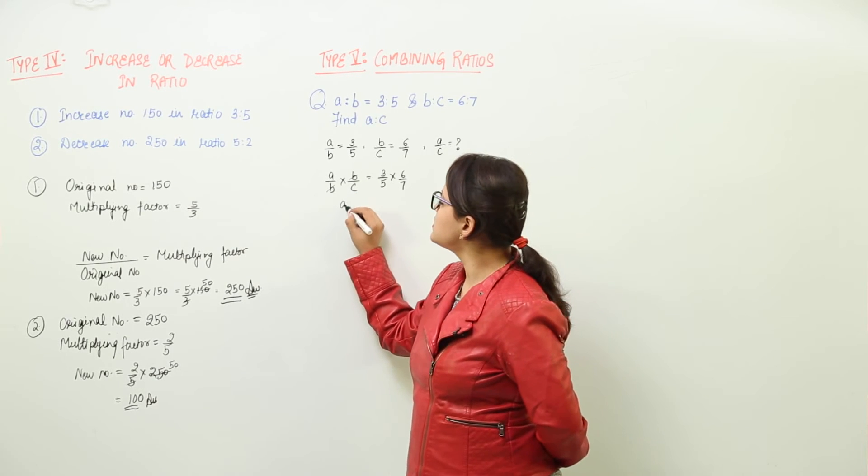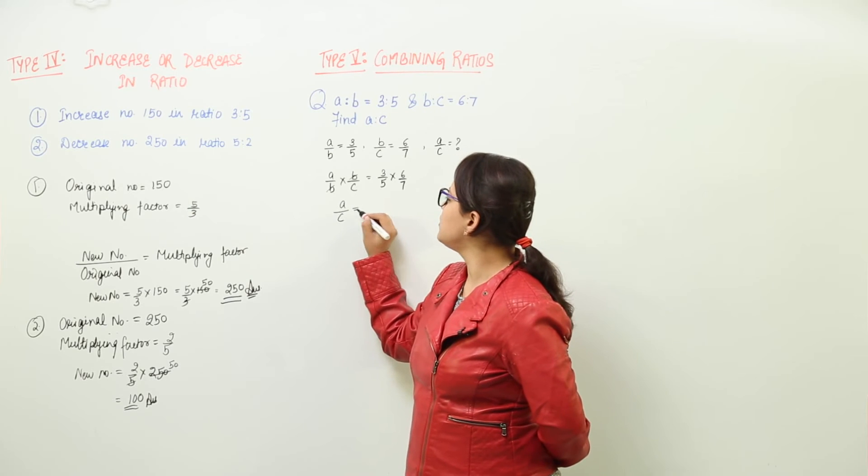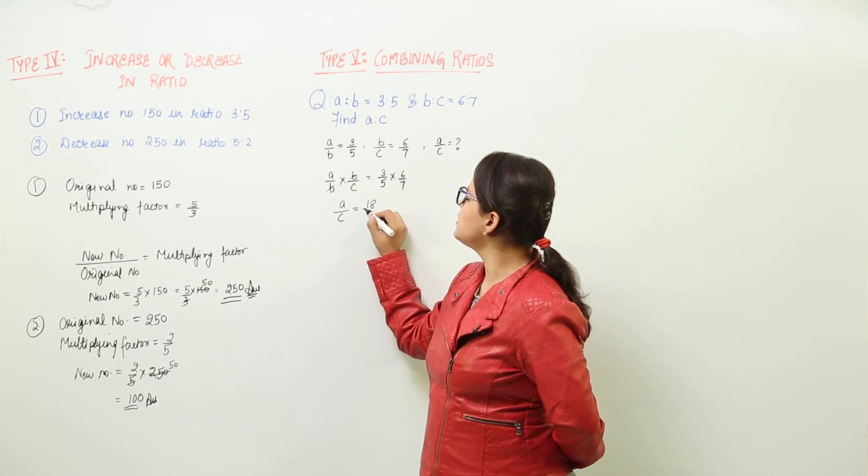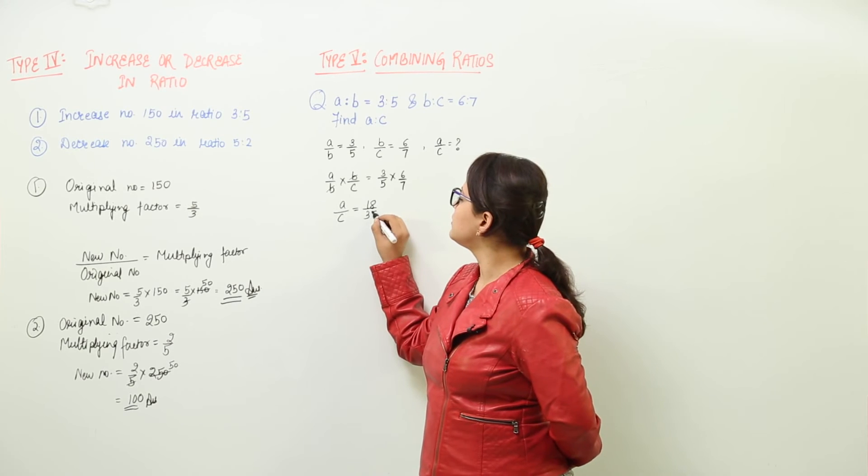So here we get A upon C equal to—what is 3 into 6? 18. And what is 5 into 7? 35.